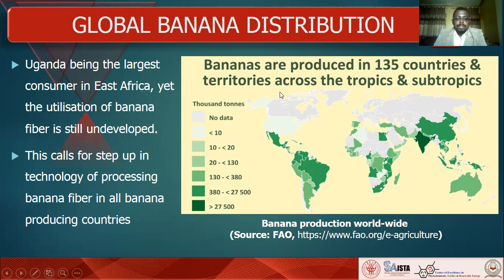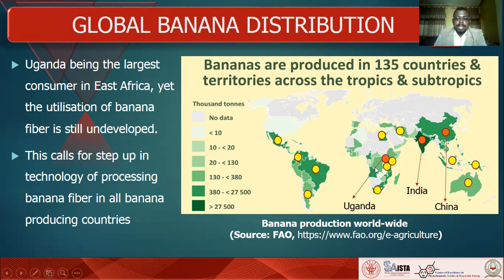Regarding the global distribution of banana fiber, according to the literature, India is the biggest producer, followed by China, Uganda third, and many others. Uganda is in Africa, and East Africa is the leading consumer. But the utilization of banana fiber is still undeveloped, which calls for a step up in technology for processing banana fiber in all producing countries, including Uganda in East Africa.